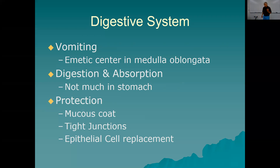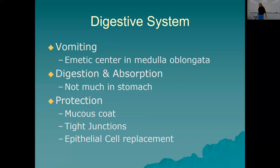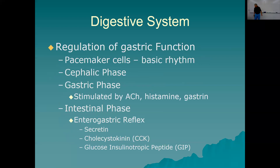Protection: a mucous coat protects the lining of the stomach from the acid made by the gastric glands. There are tight junctions between the cells so secretions can't get in between them. And you constantly replace the epithelium throughout the entire GI tract.